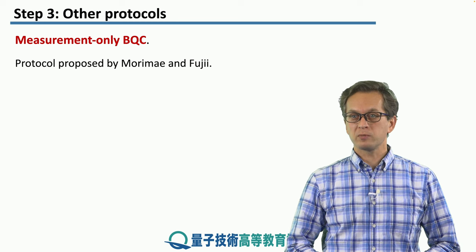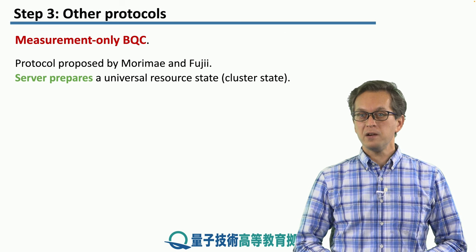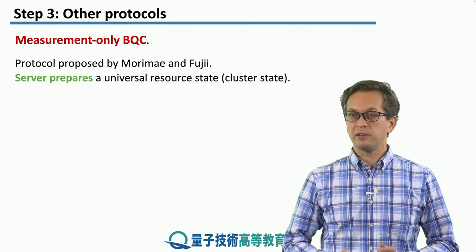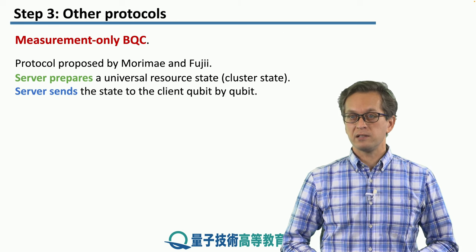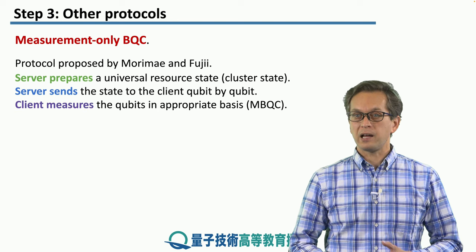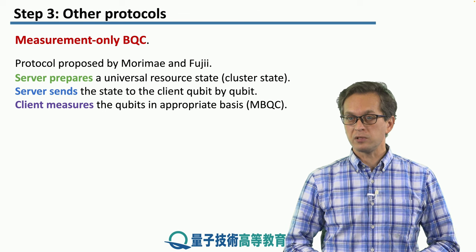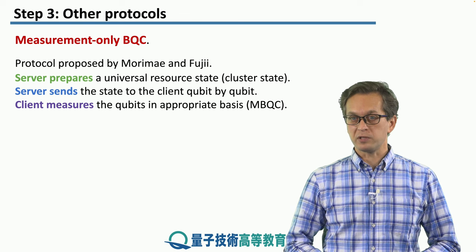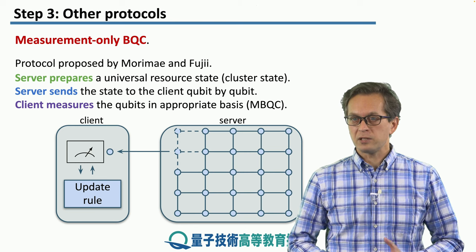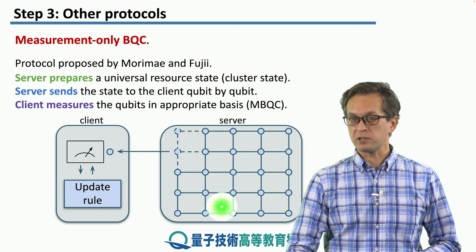This protocol was proposed by Morimai and Fuji and it works in the following way. The server prepares a universal resource state — for example, a cluster state — and rather than keeping it, the server sends the state to the client qubit by qubit. The client is capable of doing single qubit measurements and basically runs normal MBQC on the qubits received from the server.